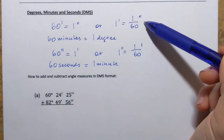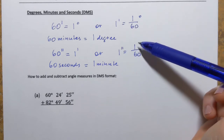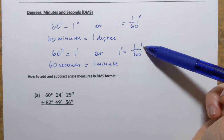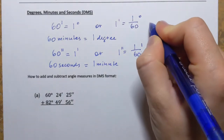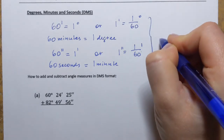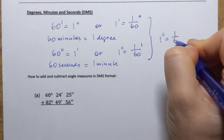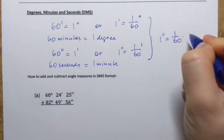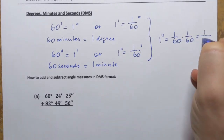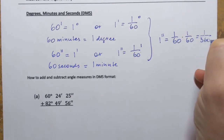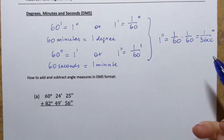We can even go one step further and connect seconds to degrees. If 1 second is one sixtieth of a minute, and 1 minute is one sixtieth of a degree, combining those two together, 1 second equals 1 over 3600 degrees. That's how we connect seconds and degrees.